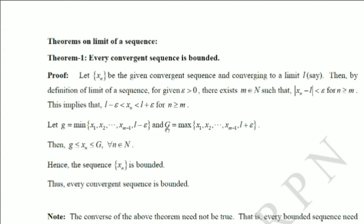By the same reasoning, consider G as the maximum of x1, x2, ..., xm−1 and l plus epsilon. Suppose x1 is the maximum. Then x2, x3, ..., xm−1 are all less than x1, and l plus epsilon is also less than x1. Since all terms from xm onward are less than l plus epsilon, and l plus epsilon is less than x1, then x1 is the upper bound for the entire sequence xn.